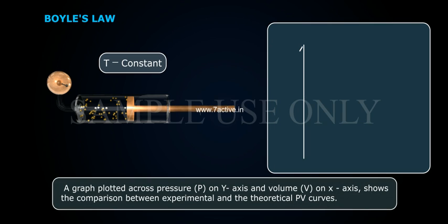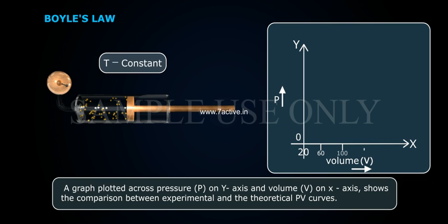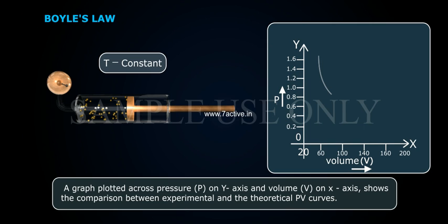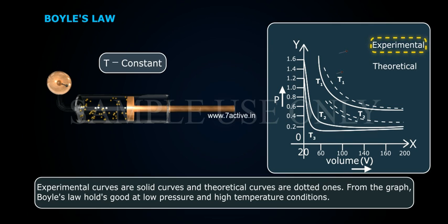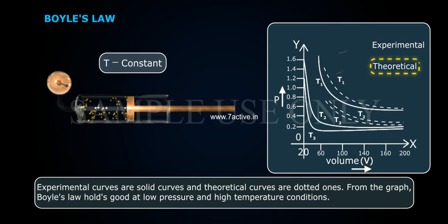A graph plotted with pressure P on the Y-axis and volume V on the X-axis shows the comparison between experimental and theoretical PV curves. Experimental curves are solid curves and theoretical curves are dotted ones. From the graph, Boyle's law holds good at low pressure and high temperature conditions.